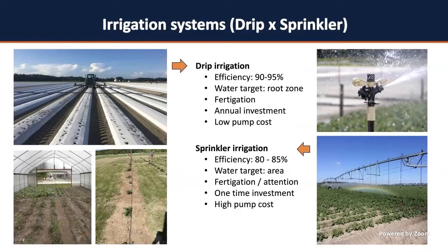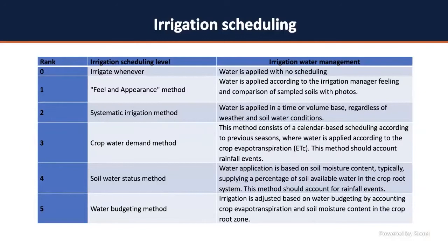Once you identify your irrigation system, you can determine how to apply water. There are several ways to manage water, and when you manage water you are talking about irrigation events and irrigation scheduling — which is how to determine when to apply water. Currently, we have about six ranks of water management scheduling level.